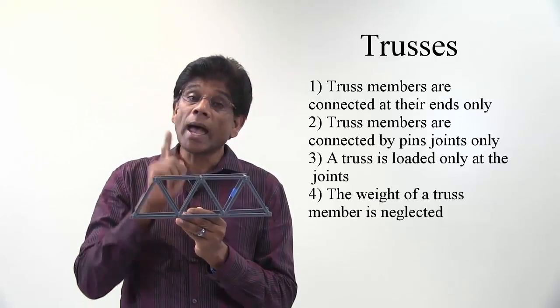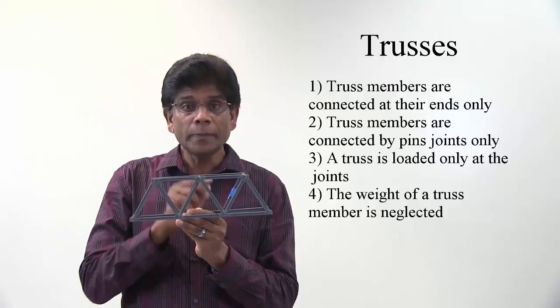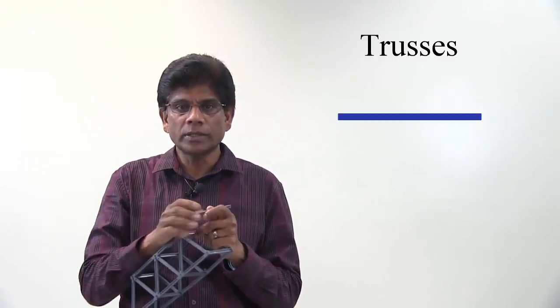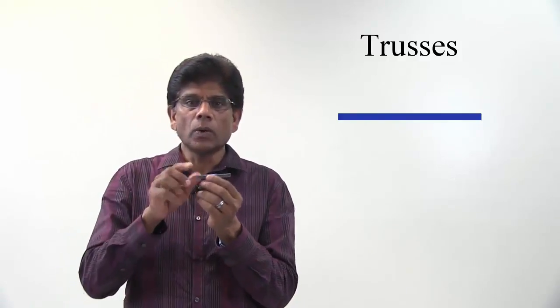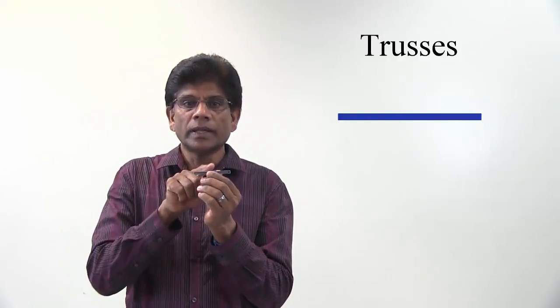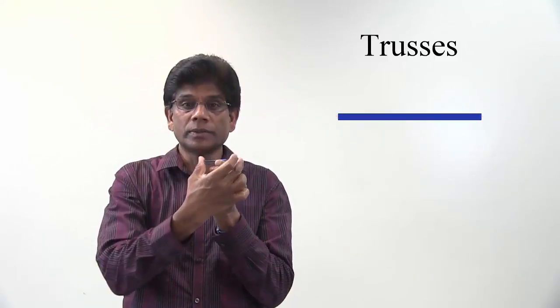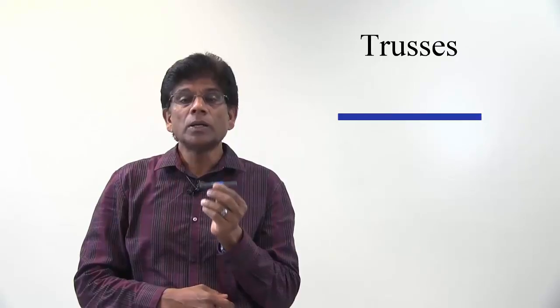each member is subjected to axial loads only. Let me remove a member from this model bridge now and show this. This member takes only axial load. Therefore, each member can only be in tension or compression. Such members are called two-force members.